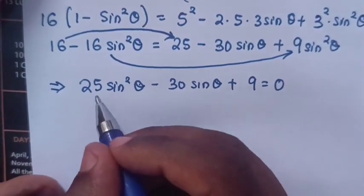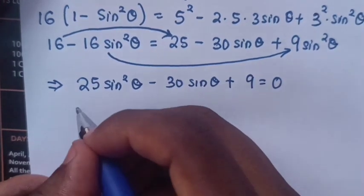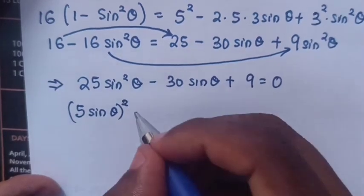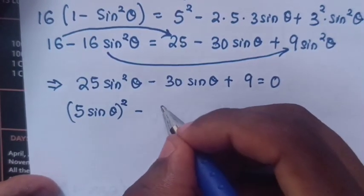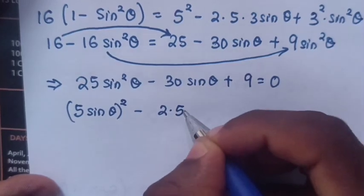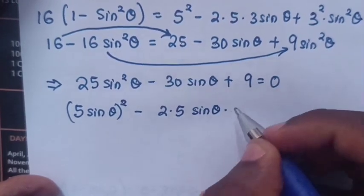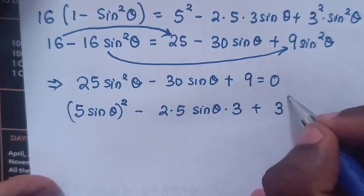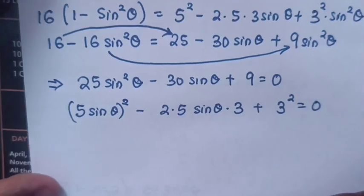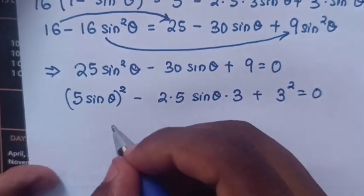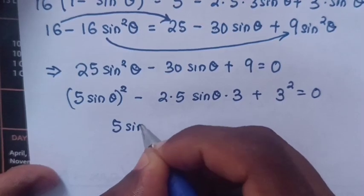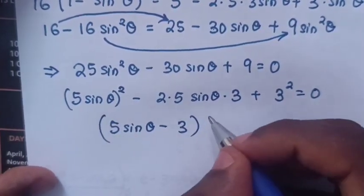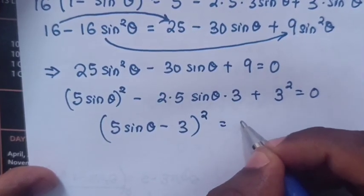This is a quadratic equation. We factorize it: it is the same as (5 sin θ)² − 2·5·3 sin θ + 3² = 0, which factors as (5 sin θ − 3)² = 0.